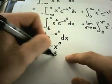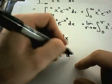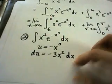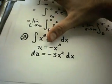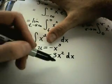So du, I'll get negative 3x squared dx. Well in my problem, I'm going to call the x cubed u, and then I'm left with an x squared dx.